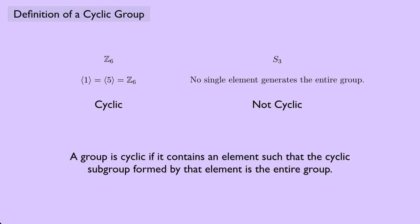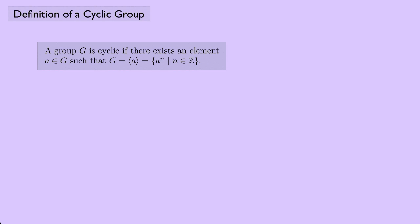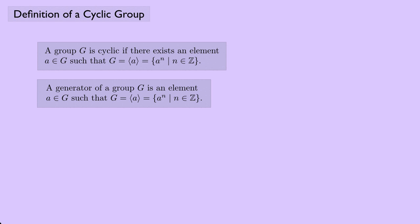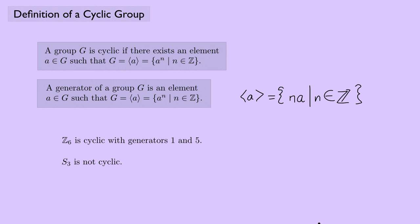So what does it mean for a group to be cyclic? A group G is cyclic if it contains an element such that the cyclic subgroup formed by that element is the entire group. More precisely, a group G is cyclic if there exists an element a in G such that G equals the group generated by a. A generator of a group G is an element a such that G equals the set of all powers a^n for any integer n — that's multiplicative notation. In additive notation, we write n times a for any integer n.